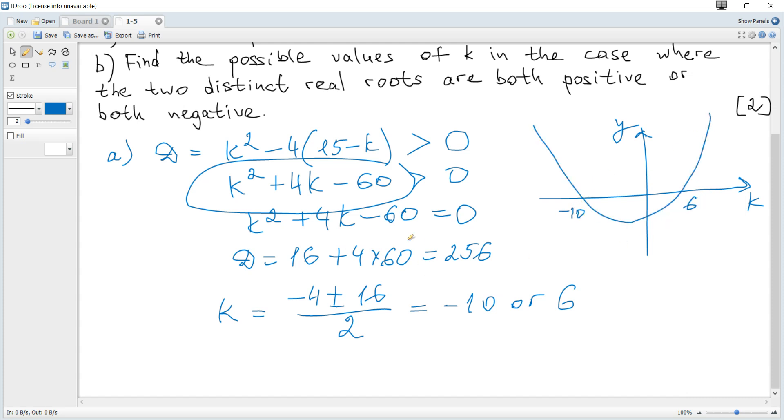We need values of this function to be greater than zero, so y values to be greater. Where is it? It's this part of the parabola and this part. But the answer must be in terms of k.